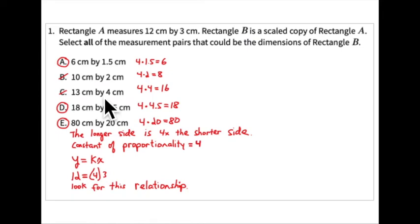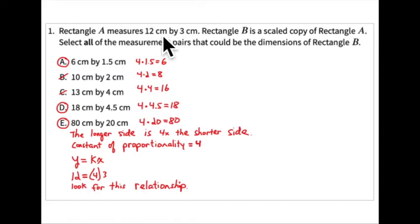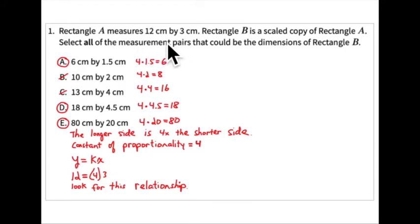Also, there's a relationship within each rectangle: the length is four times longer than the width. So the width is 3 cm, and 4 times 3 is 12 — the length. For the first option — 6 cm length and 1.5 cm width — one half of 12 is 6 and one half of 3 is 1.5, so the scale factor is one half. This is true, and notice that 4 times 1.5 equals 6.